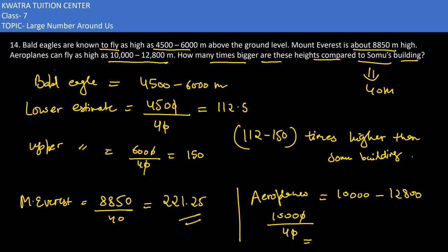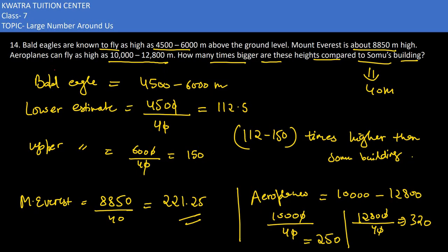Dividing 8,850 by 40 gives approximately 221.25 — so about 221 times higher. For the airplane's upper limit, we take 12,800 divided by 40. Cancelling zeros, that's 1,280 divided by 4, which equals 320. So airplanes fly about 250 to 320 times higher than the Somos building.